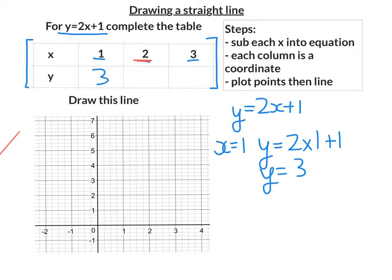Now let's put in x equals 2 into my equation. Remember my equation is y equals 2x plus 1. So y equals 2 times x, in this case it's 2, plus 1. y equals 2 times 2 plus 1, so 2 times 2 is 4, add 1 is 5. So I'm going to put the 5 in there.